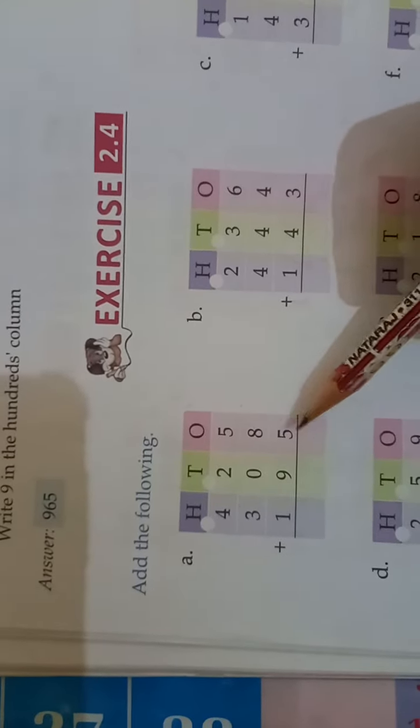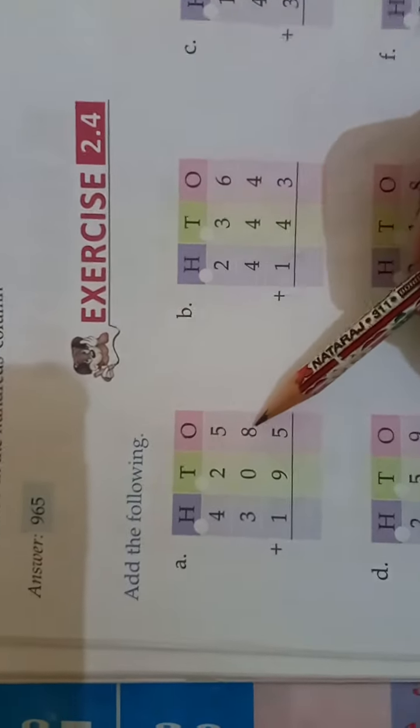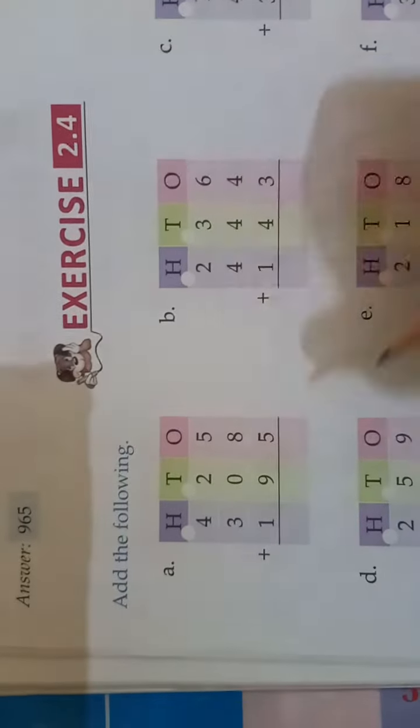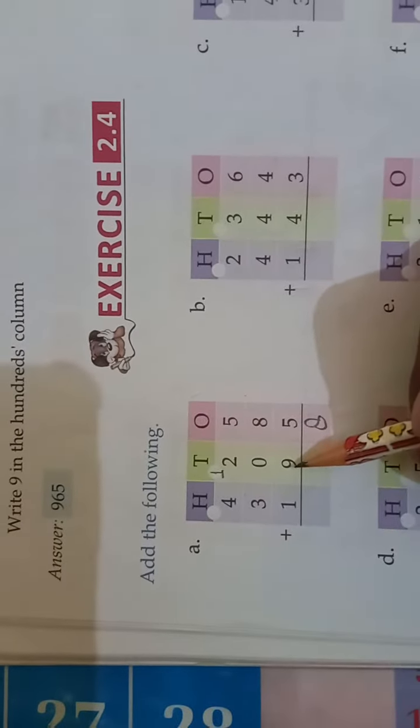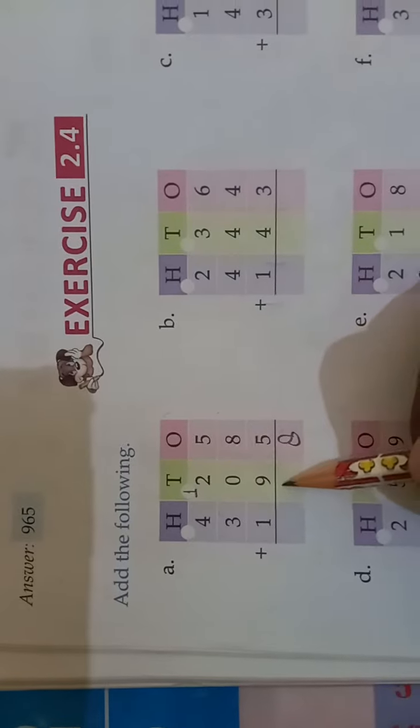5 plus 8 is 13, plus 5 is 18. It is 18. We will write only 8 of 18 and 1 is carry. 2 plus 9 is 11, plus 1 carry is 12.